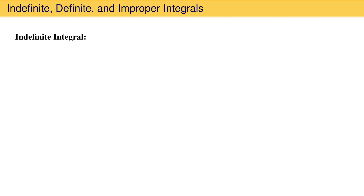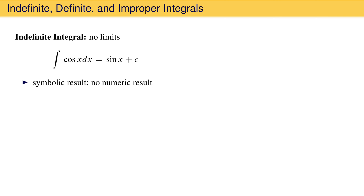An indefinite integral has no fixed limits between which it is evaluated. An example is the integral of cosine dx, which evaluates to sine x plus a constant of integration. The result is symbolic, not numeric, and there is always a constant of integration.